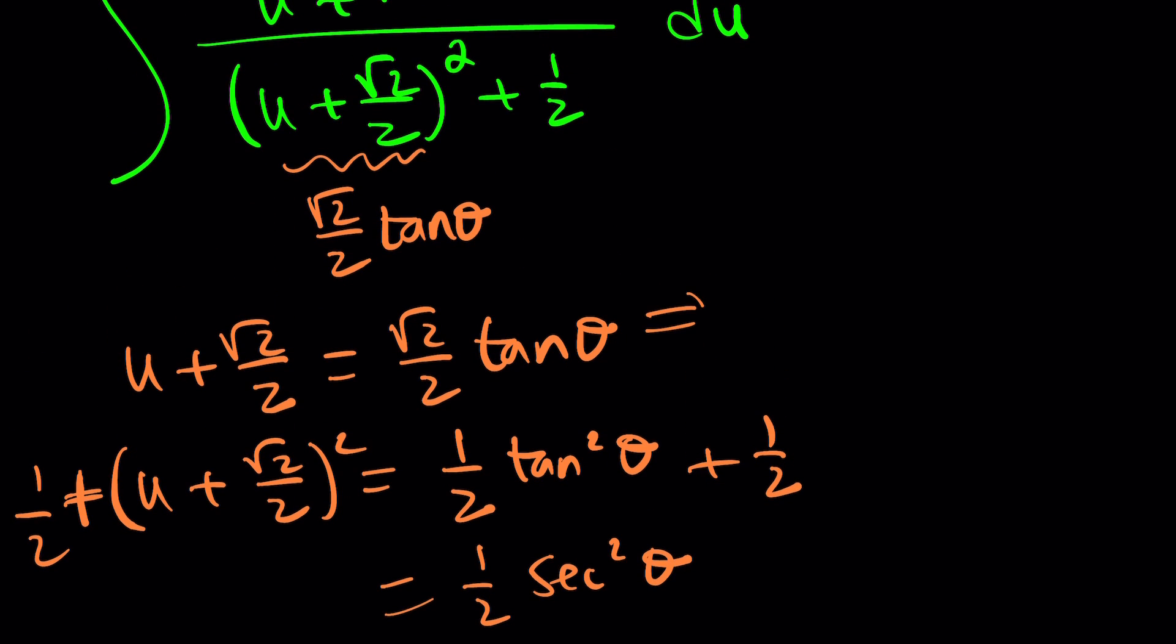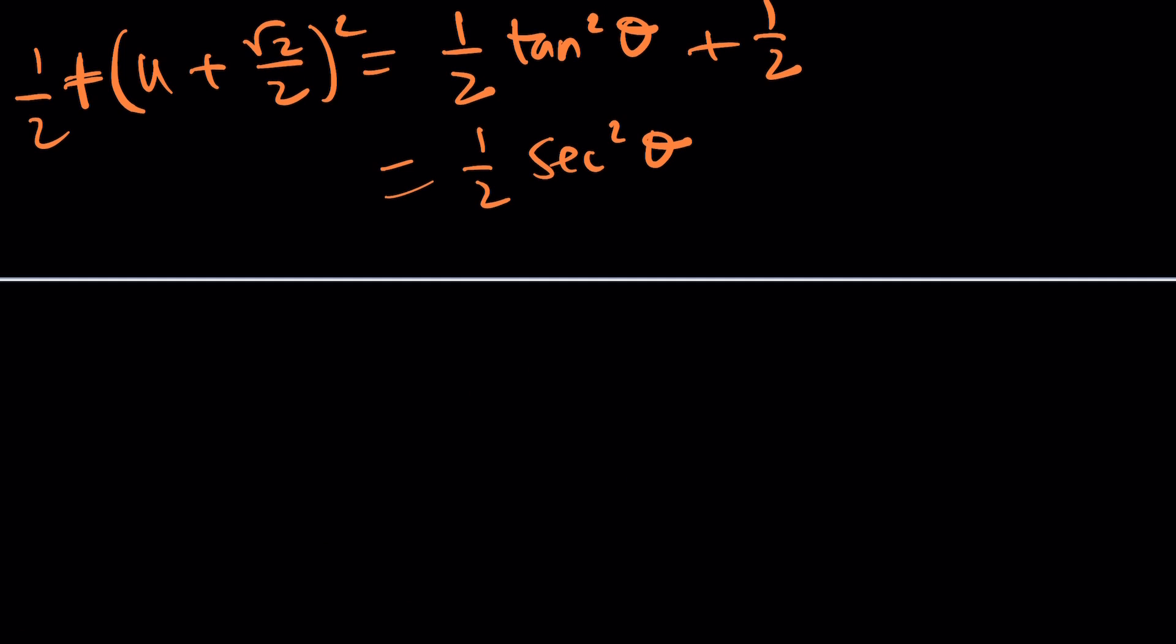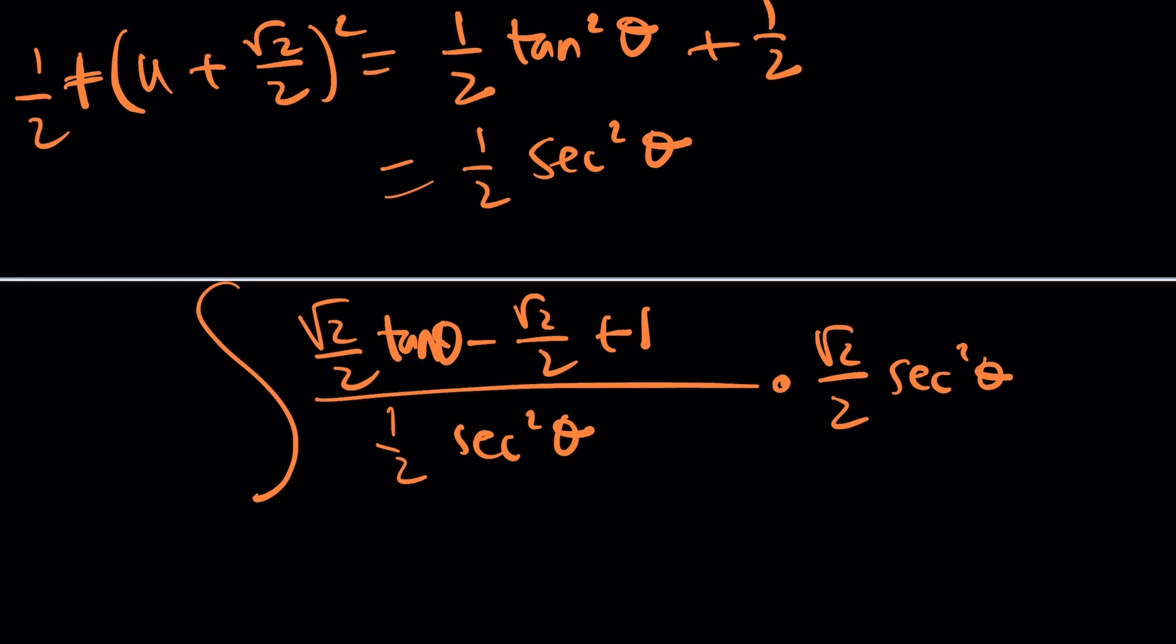But what about du? Easy. Differentiate both sides, you're going to get du. Root 2 over 2 is a constant, so it'll stay. If you differentiate tangent, you're going to get secant squared again. This is the beauty of this method, because those tangent secant squareds are going to cancel out. So you're going to get something like this, okay? You're going to get an integral that looks like root 2 over 2 tangent theta minus root 2 over 2 plus 1 over 1 half secant squared theta. And here, you're going to get root 2 over 2 secant squared theta d theta. And ta-da! These two are going to cancel out. The 2s are also going to cancel out. You're going to end up with a root 2. If you distribute it, that gives you 1, so on and so forth. Anyways, the rest should be fairly easy.